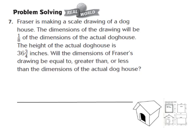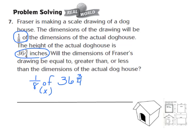Let's take a look at question number 7, one of our real-world problem-solving questions. Number 7 says: Frazier is making a scale drawing of a doghouse. The dimensions of the drawing will be one-eighth of the dimensions of the actual doghouse. The height of the actual doghouse is 36 and 3 fourths inches. We know the dimensions of the drawing will be one-eighth of the actual doghouse, and finding one-eighth of something is like multiplying by one-eighth. So we're finding one-eighth of 36 and 3 fourths inches.